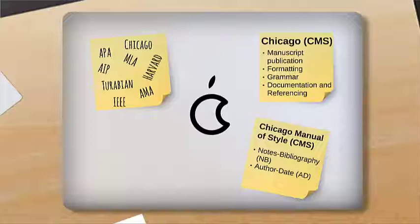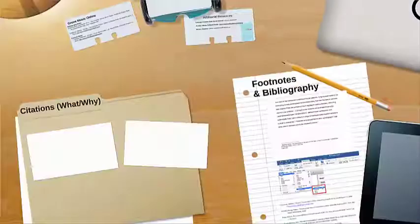The other documentation style, the Author Date System, or AD, is nearly identical in content but slightly different in form, and is preferred in the social sciences. Be sure to confirm with your professor which format should be used in your paper before you get started.